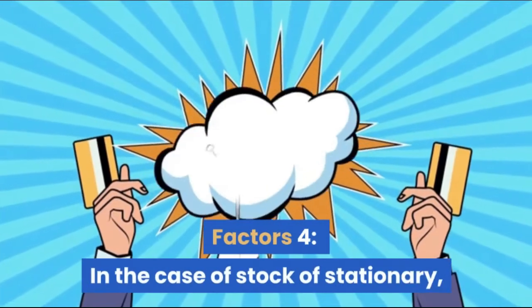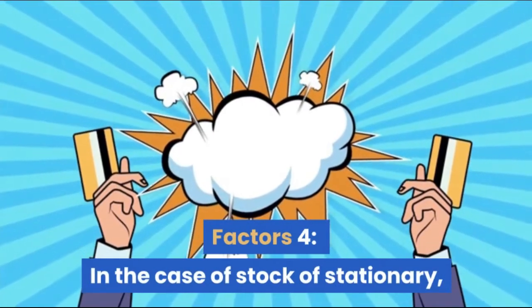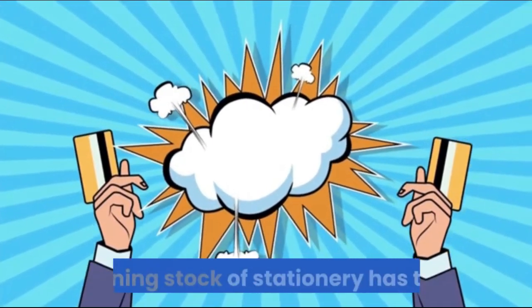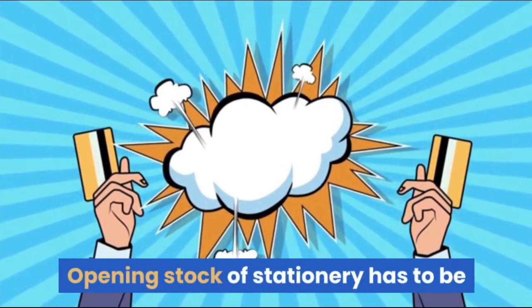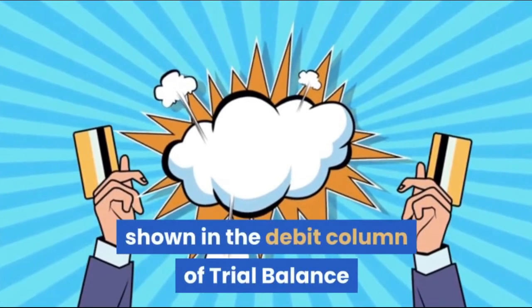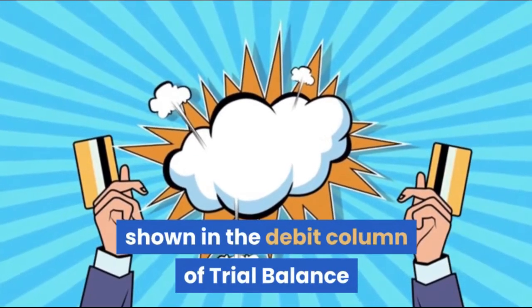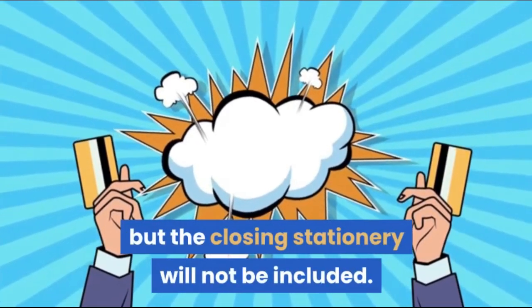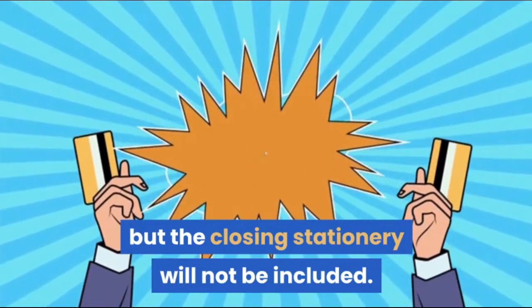Factor 4: In the case of stock of stationery, the opening stock of stationery has to be shown in the debit column of the trial balance, but the closing stationery will not be included.